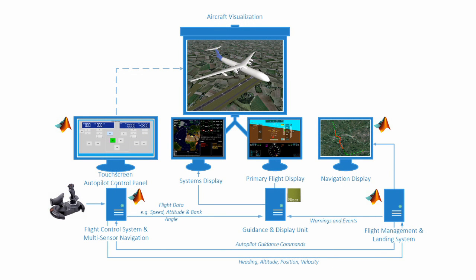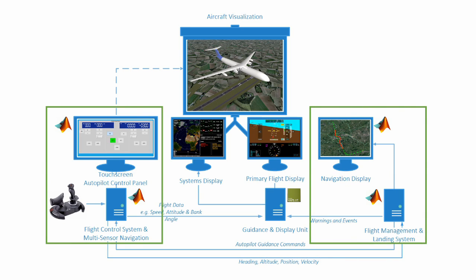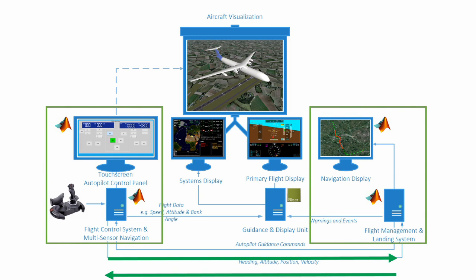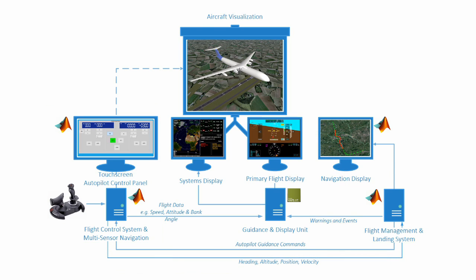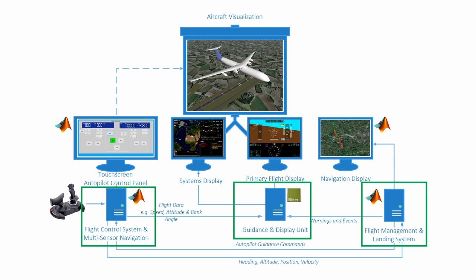The flight control computer and the flight management system computer communicate via Simulink UDP connection blocks. The VAPS-XT software running the display system runs on a third computer and receives data from the flight management system computer and the flight control computer, also via UDP connections implemented in MATLAB.